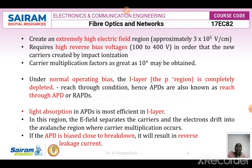Under normal biasing conditions, the I layer — that is the P⁻ region — is completely depleted of charge carriers. This condition is called the reach-through condition. Hence, avalanche photodiodes are called reach-through APDs or RAPDs. Light absorption in APDs is most efficient in the I layer. In this region, the electric field separates the charge carriers — the electrons drift into the avalanche region where carrier multiplication occurs.